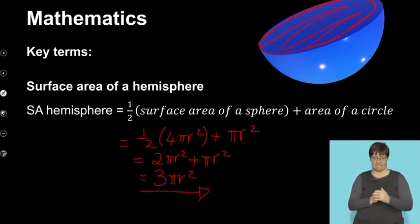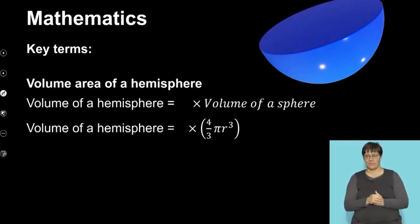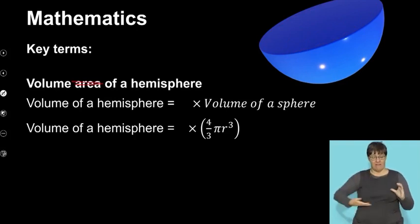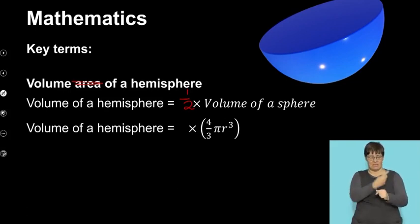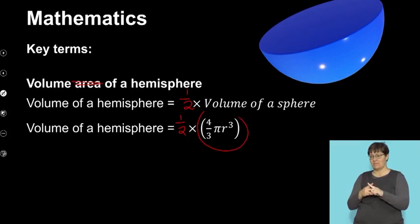Now let us define the volume of a hemisphere. The volume of a hemisphere is going to be equal to a half times the volume of a sphere, because if a sphere has a certain capacity and I'm now taking a hemisphere, that is half of the capacity of the sphere.